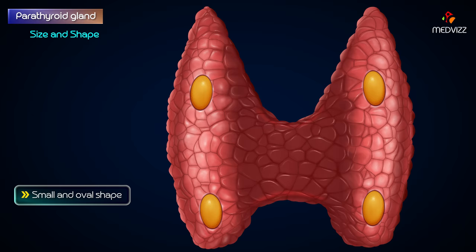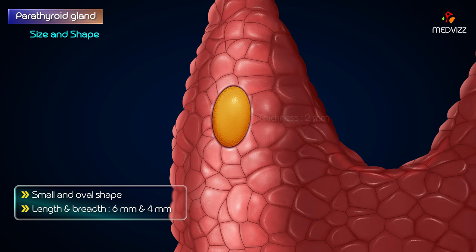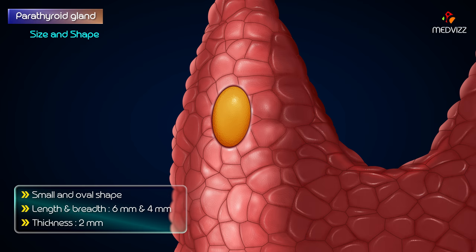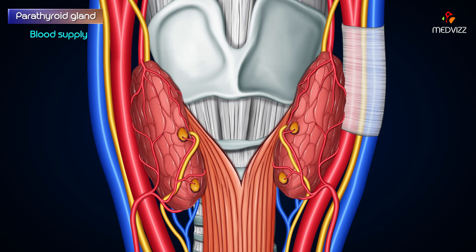Each gland measures about six millimeters in length, four millimeters in breadth, and two millimeters in thickness — approximately the size of a split pea — and weighs about 50 milligrams. The parathyroid glands have a rich blood supply.